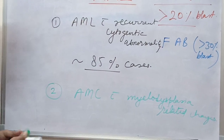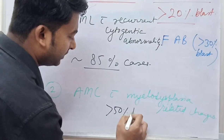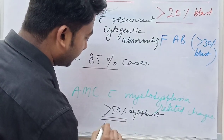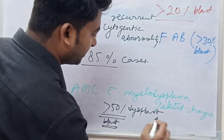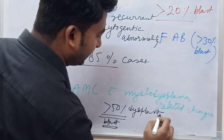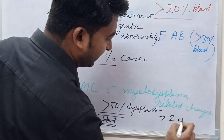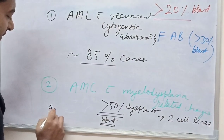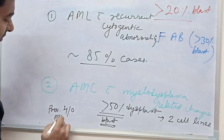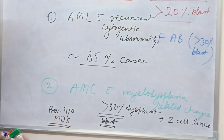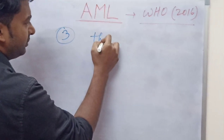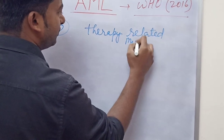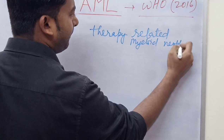The criteria for AML with myelodysplasia-related changes includes more than 50% dysplasia in two cell lines, and previous history of MDS. It has poor prognosis. The third group is therapy-related myeloid neoplasm, with two categories: alkylating agent-related AML, and topoisomerase-2-inhibitor-related AML, which has translocation 11q23 MLL.